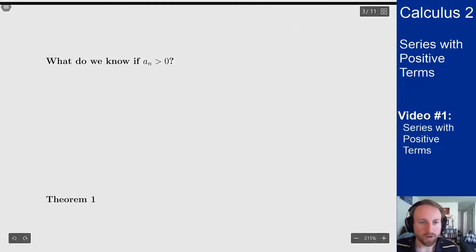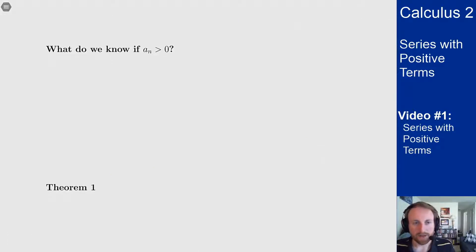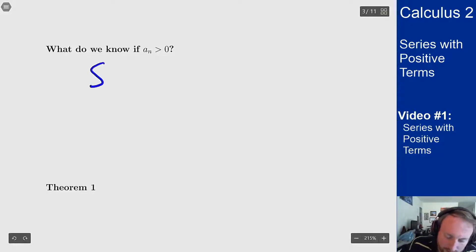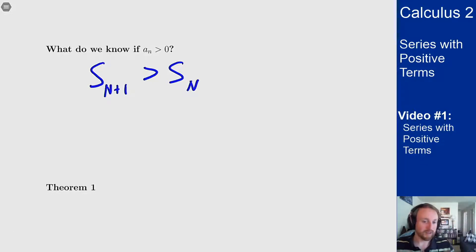So what's the point and why is this easier? What do we know if every term is positive? Well if every term is positive, I know that if I look at the partial sum up to n plus 1 terms, that's going to be bigger than the partial sum up to n terms. What's the difference between adding up n terms and adding up n plus 1 terms? It's the a_{n+1} term.